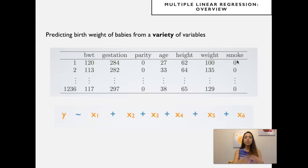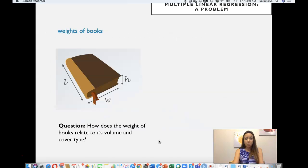These predictor variables can be a combination of numerical and categorical variables. For instance, weeks of gestation is a numerical variable, height of the mother is a numerical variable, age of the mother is a numerical variable, while whether or not the mother smokes is a categorical variable. We will explore one simple problem with two continuous variables and then one where we'll mix a continuous variable and a categorical variable.